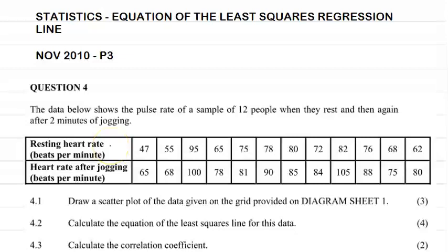It reads as follows: The data below shows the pulse rate of a sample of 12 people when they rest and then again after two minutes of jogging. The resting heart rate are all these values and the heart rate after jogging is all these values as well.